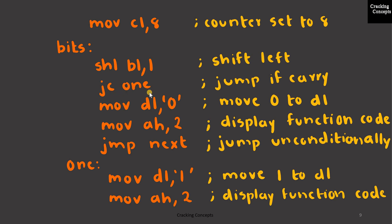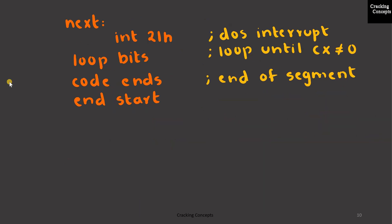Jump if carry, and if the value is 1, then we perform a jump to the label ONE, where we'll store the value 1 to the DL register and load the function code 2 to the register AH, and then we call the DOS interrupt 21H.